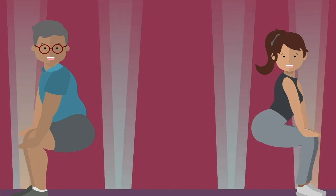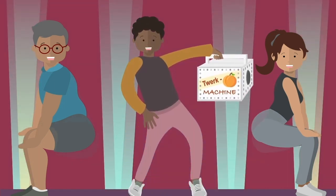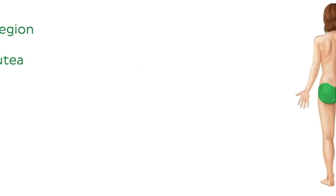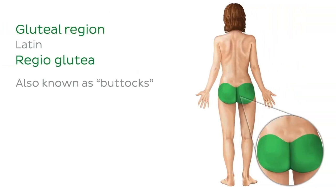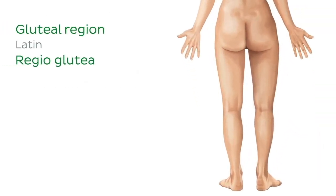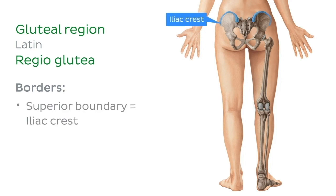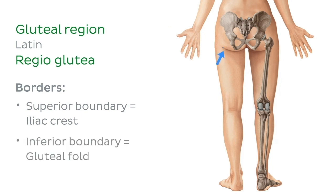I'm talking about your beloved twerk machine that's hardest to miss on our anatomical map. The gluteal region, also known as the buttocks, lies posterior to the bony pelvis and extends from the top of the hip bone, known as the iliac crest, to the gluteal fold below.